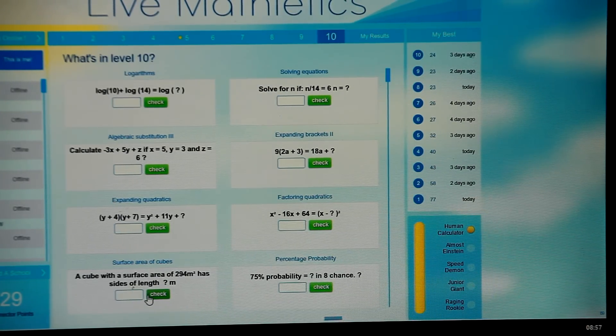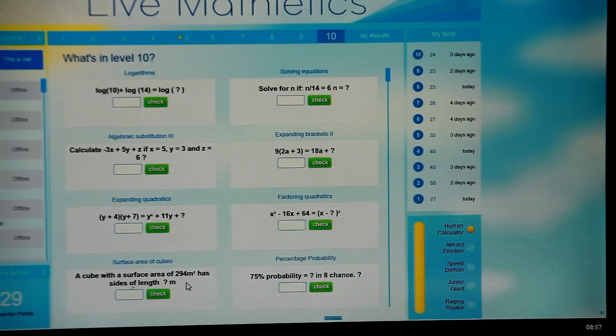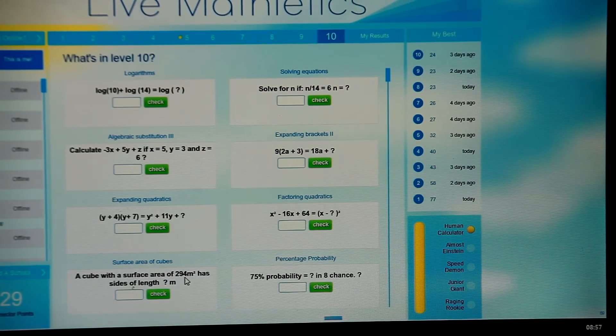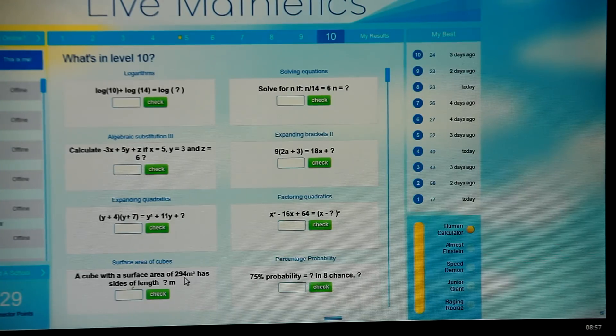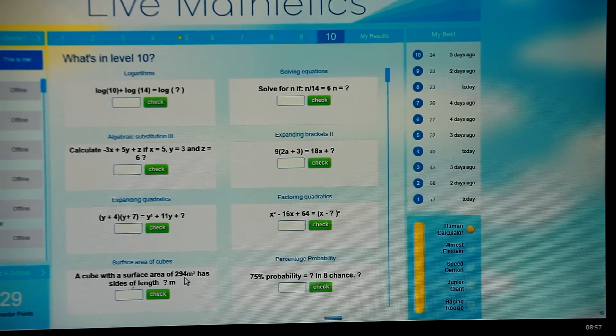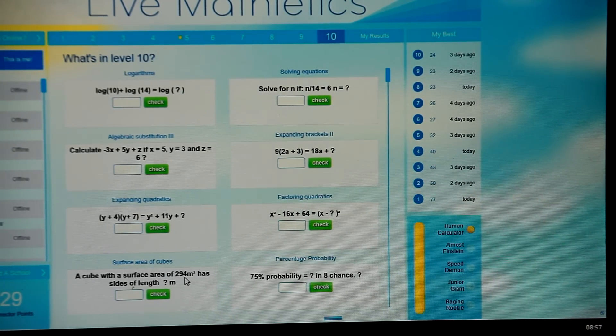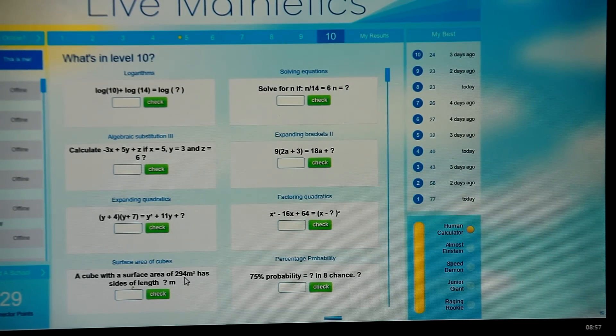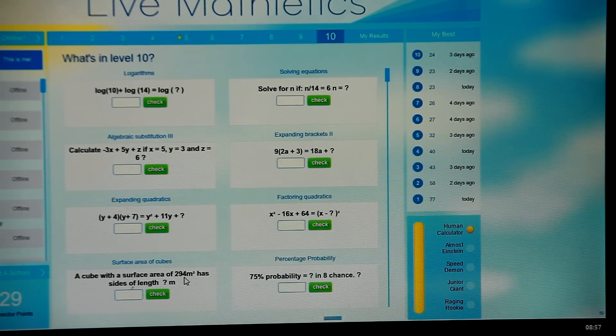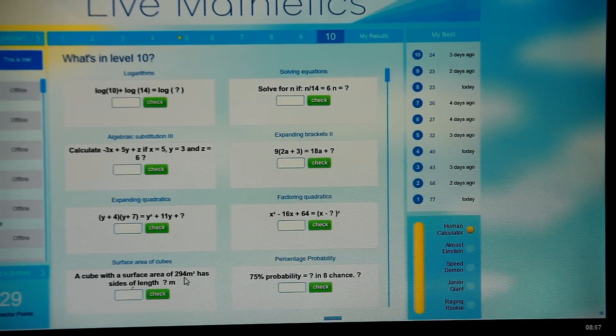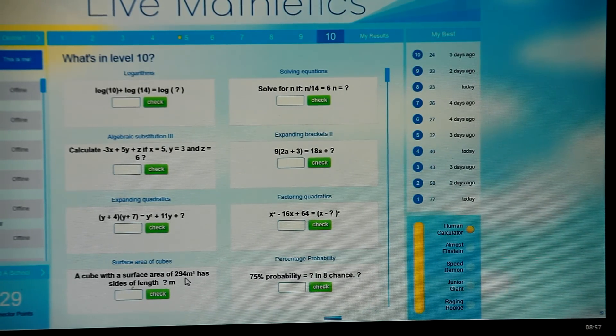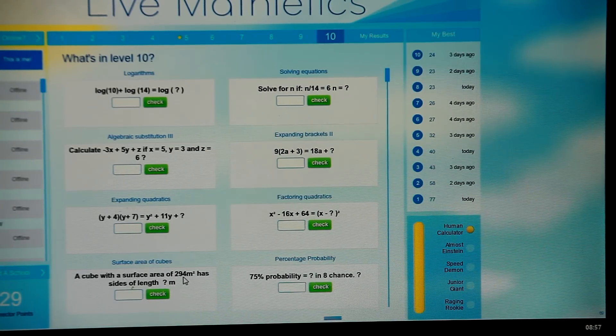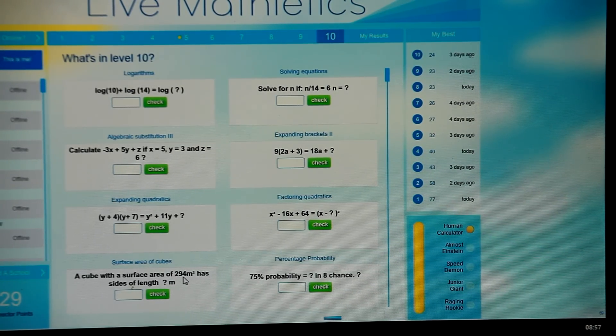When you have these questions about cubes with surface areas of however many meters it might be, you need to divide that by six and then you need to take the square root, because there are six sides. That gets you down to the area of one side, and the area of one side is of course the square of the actual side that you have to find. Now you don't have to go through very lengthy calculations.